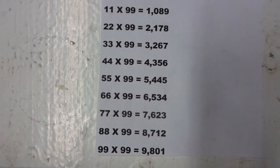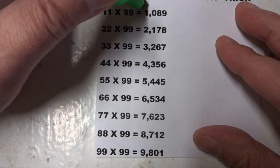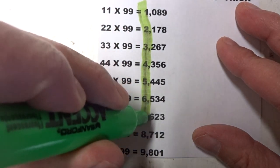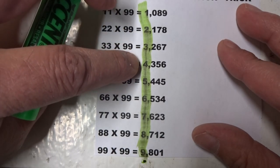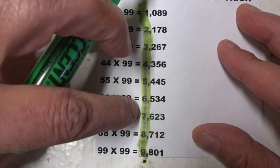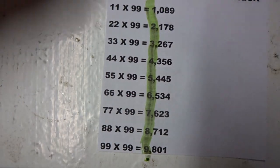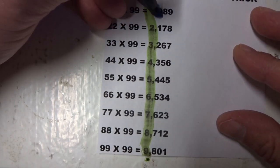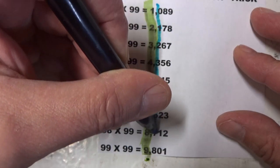The answer is this: look at the columns. In the first column, marked by green, we have 1, 2, 3, 4, 5, 6, 7, 8, 9. In the second column, we go from 0, 1, 2, 3, 4, 5, 6, 7, 8.